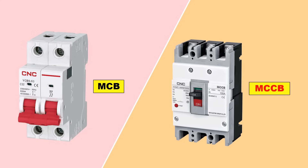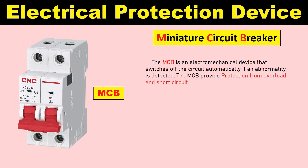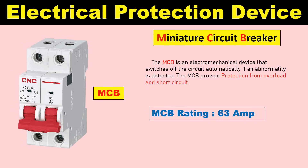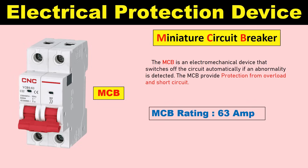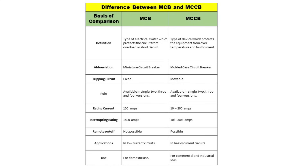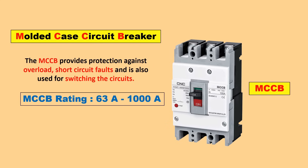Next device is MCCB. Full form of MCCB is Molded Case Circuit Breaker. The maximum MCB rating you can buy is 63A, though these days a 100A MCB is also available. If you want a protection device of even higher rating, you have to buy a MCCB. MCCB also provides protection from overload and short circuit, same as MCB, but you can find a MCCB of 1000A or even higher rating in the market.